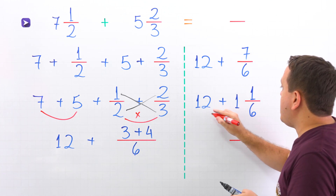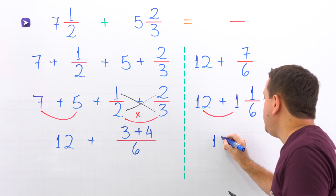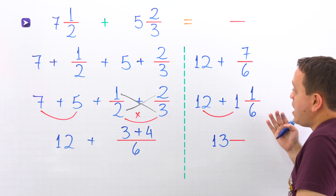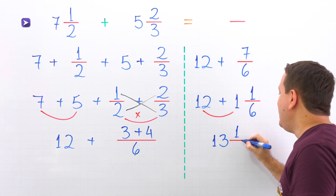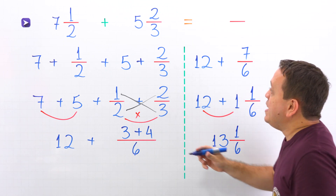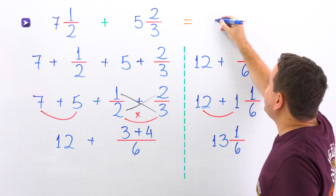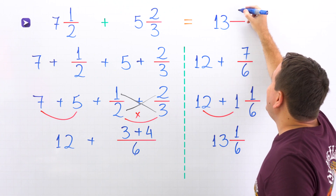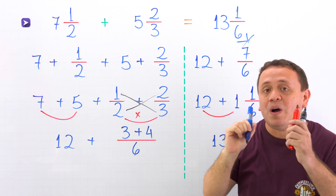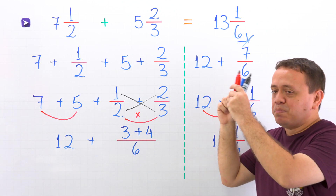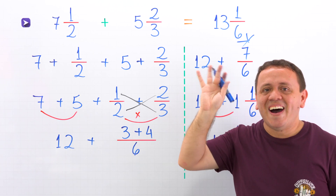We start by adding the whole numbers: 12 plus 1 gives us 13. Then we add the fractions — however, we only have one fraction here and that fraction is 1 sixth. We're done! In that way, 7 and 1 half plus 5 and 2 thirds gives us 13 and 1 sixth. That's all for today. If you want to learn more about mixed numbers, check out that playlist. See you next time and have a good one. Bye!